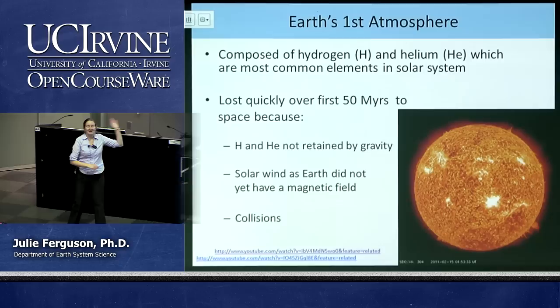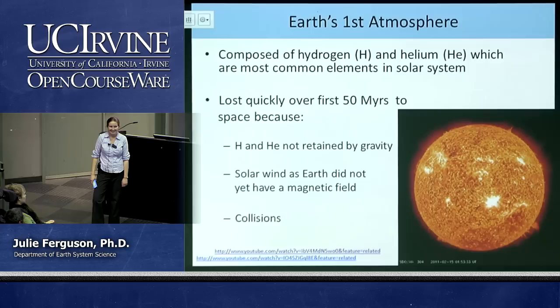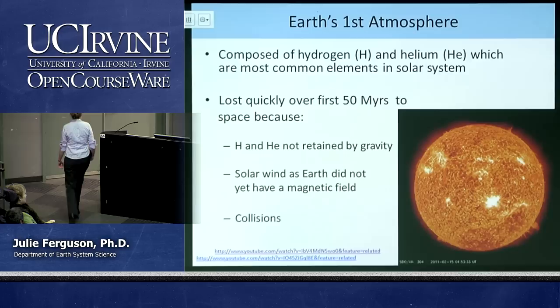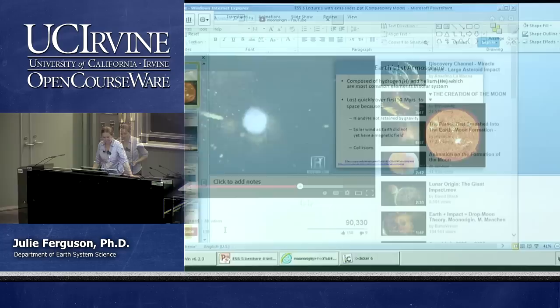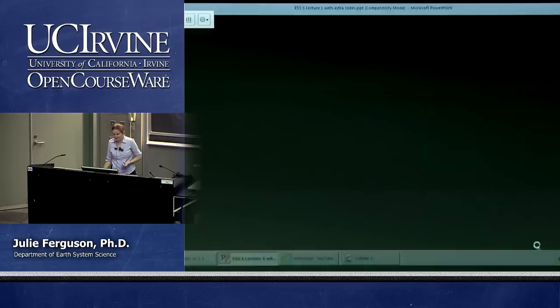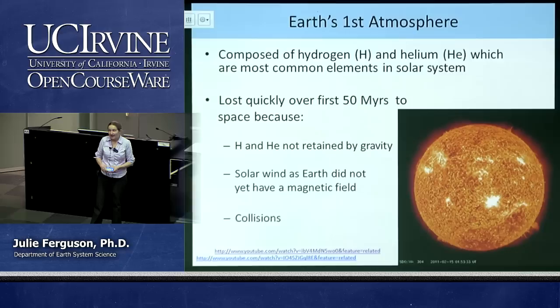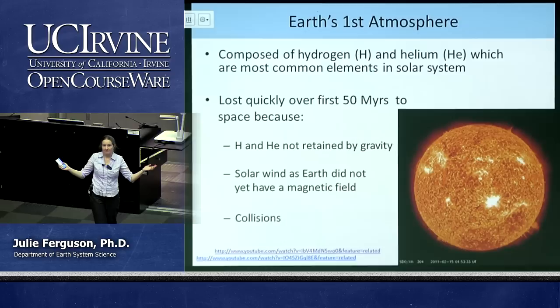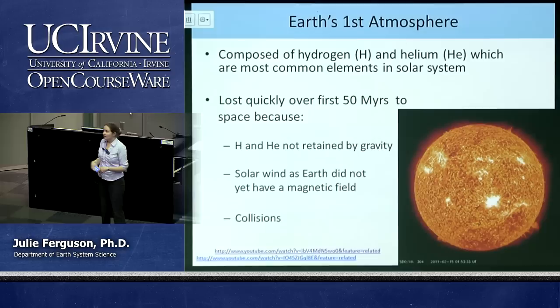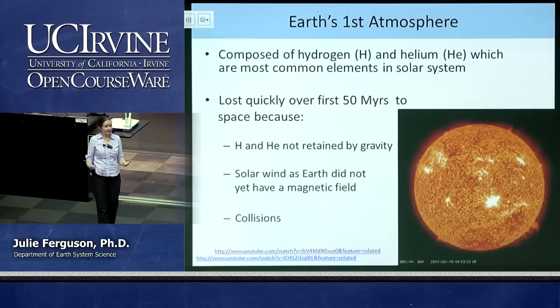The last reason we lost our early atmosphere was collisions. The Moon formed from a giant collision with Earth — and obviously any early atmosphere we had would have just been blasted off into space at that time. So really, we had to start from scratch. After that Moon-forming collision, we were basically just a bare ball of rock. We need to think about where our gases came from to form a new atmosphere after that first one was lost.